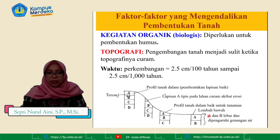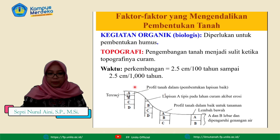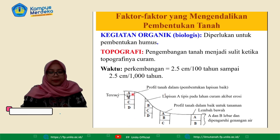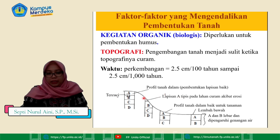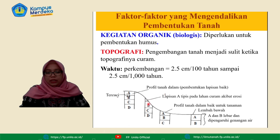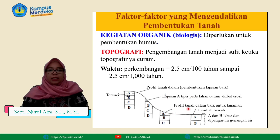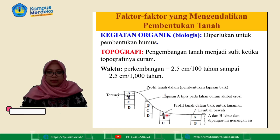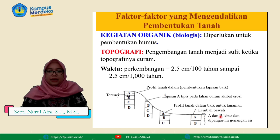Berikut adalah gambar hubungannya dengan topografi. Profil pertama ini profil tanahnya dalam, pembentukan lapisan-lapisannya baik, ada horizon A, B, C, dan D. Namun pada profil kedua lapisan A tipis pada lahan curam akibat adanya erosi sehingga lapisan A nya yang tersisa hanya tipis. Profil ketiga merupakan profil tanah yang dalam dan baik untuk tanaman, sudah ada horizon A, B, dan C. Kemudian untuk yang keempat ini A dan B lebar dan dipengaruhi oleh genangan air.